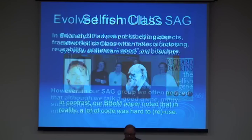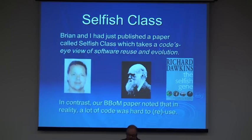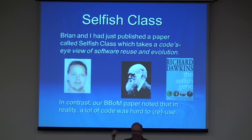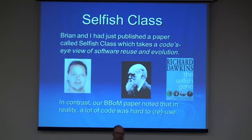Although we talked a good game, we noticed there were often problems. The first paper Brian and I published was called Selfish Class. The idea was: imagine you're a piece of code and you want to live — what attributes should you have to survive? What makes for good, reusable, clean design? We had things like low surface-to-volume ratio — like a sphere in the physical world — meaning a simple interface that gives you a lot of functionality and is easy to use.